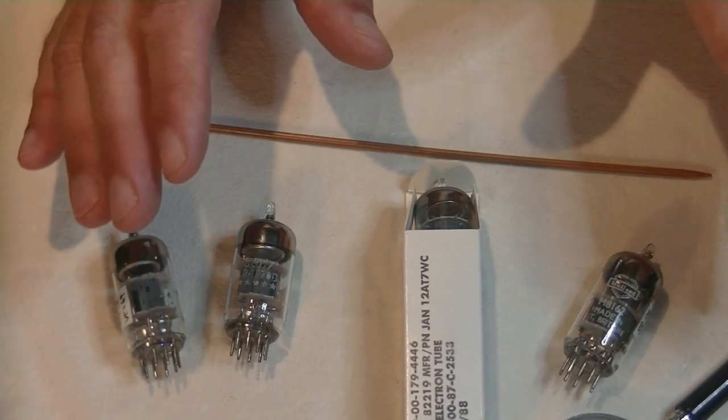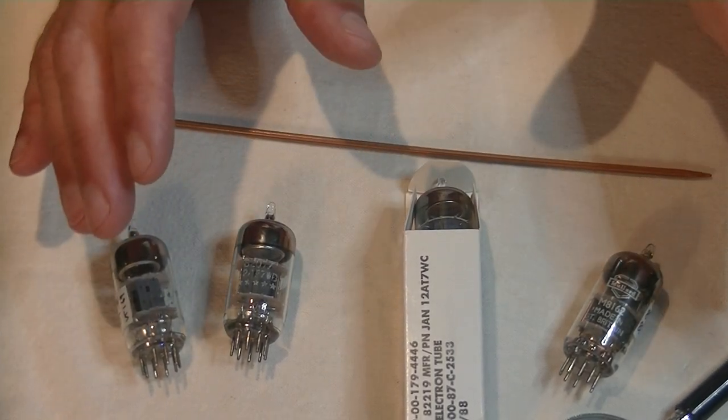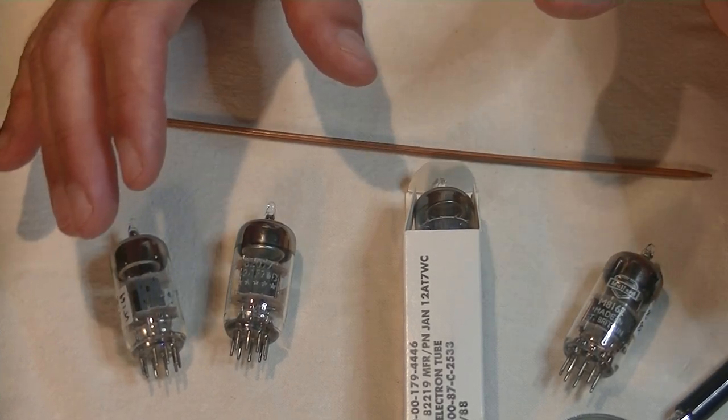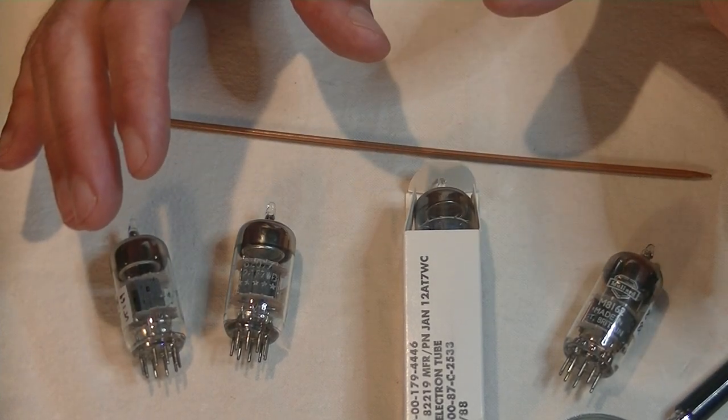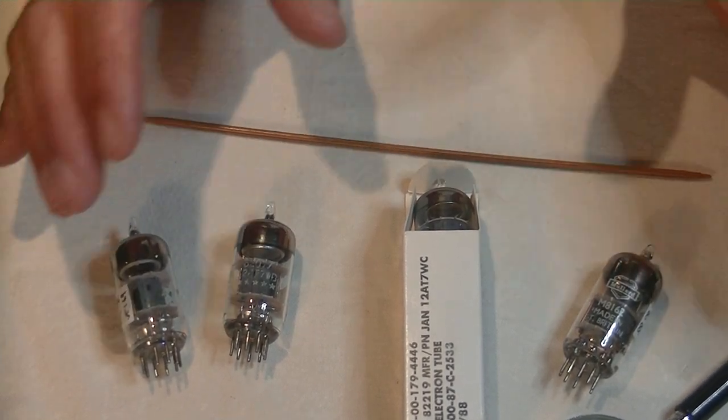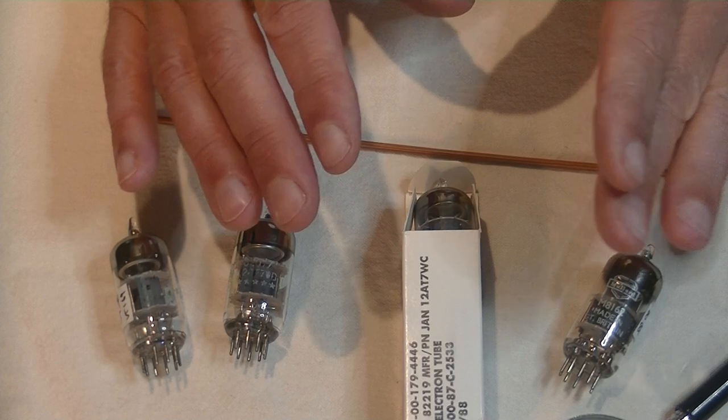Like the 12AX7, the 12AT7 was released in 1947, and in fact was available a few months before the 12AX7. In Europe, this tube is the ECC81, same tube, different name.